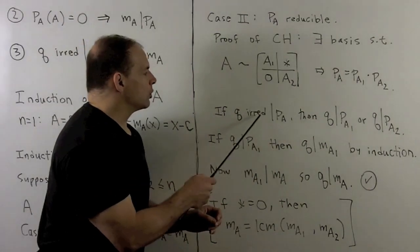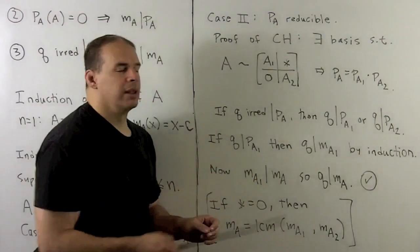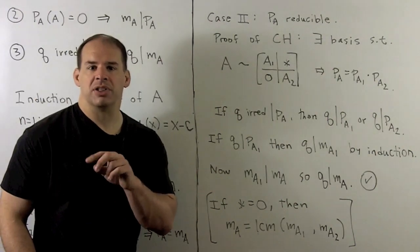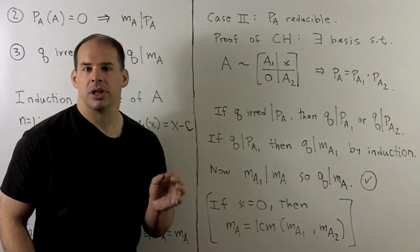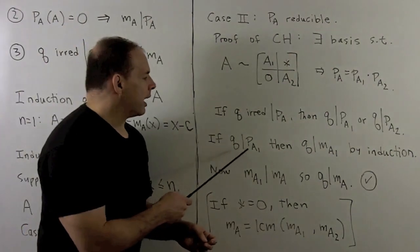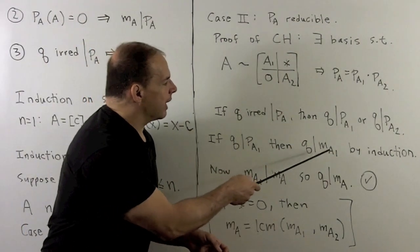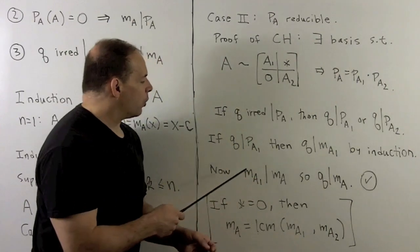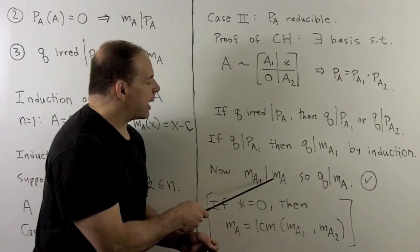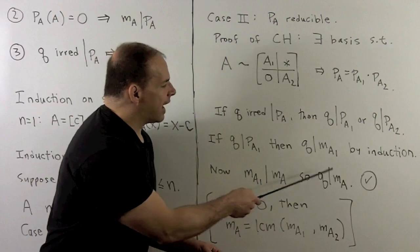Now, that says that we can write P_A as the product P_A1 times P_A2. Because Q is irreducible and divides P_A, that means Q divides one of P_A1 or P_A2. So let's suppose P_A1. Now, by the induction hypothesis, Q divides M_A1.